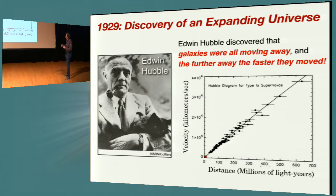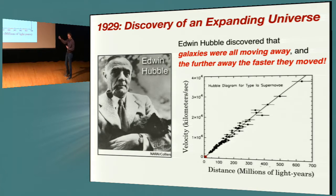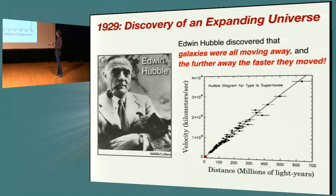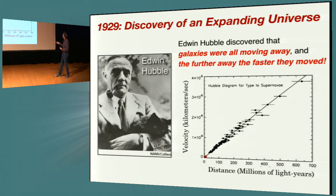Why did we think it happened? Very soon after that, we discovered that the universe was expanding. Edwin Hubble, when he looked out at distant galaxies, found that not only were those galaxies moving away from us — all of them — but the further away a galaxy was, the faster it moved. This is the so-called Hubble's Law, which basically measures the velocity, the recession of a galaxy versus its distance. This relationship holds out for hundreds of millions of light years: things that are farther away are moving faster away from us.